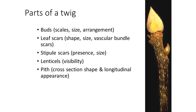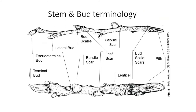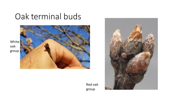It might help to pause for a moment and look at a few terms that can help you with winter tree ID. In this picture you see the parts of a twig — these include the buds, the leaf scars, the stipule scars, lenticels, and the pith, which is the center part of the twig. The next picture shows bud terminology — photos to help when terms are brought up in an identification booklet.